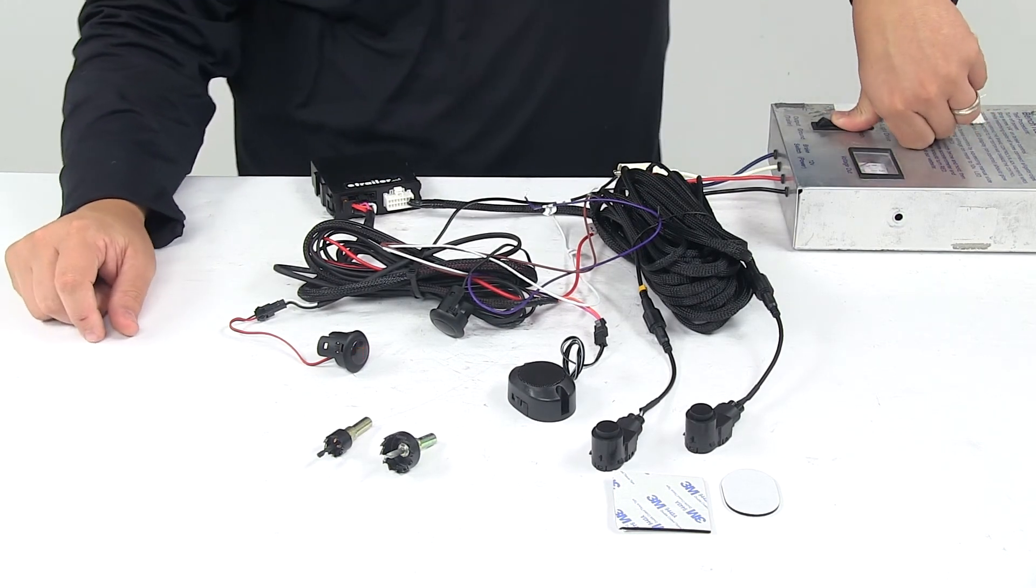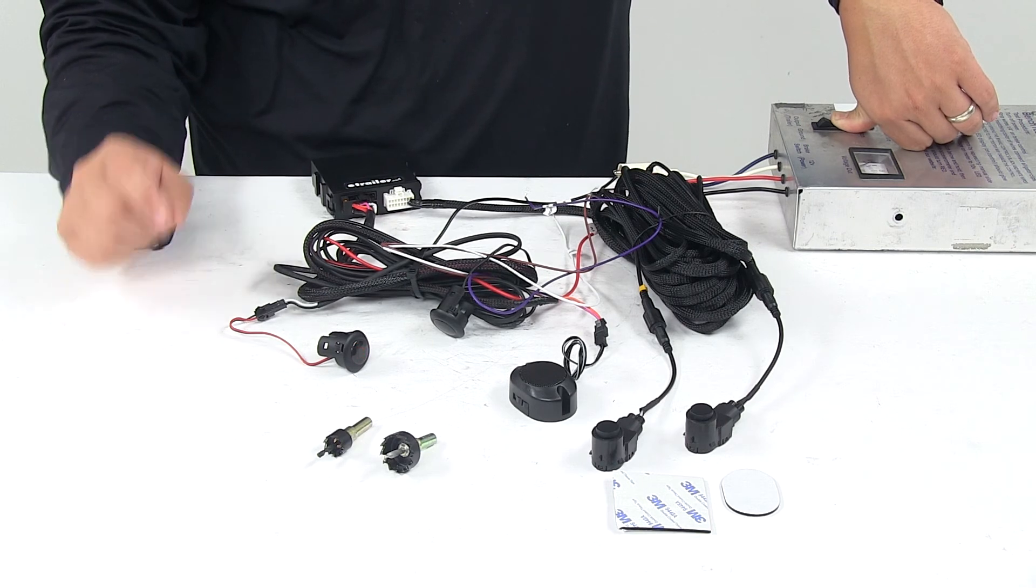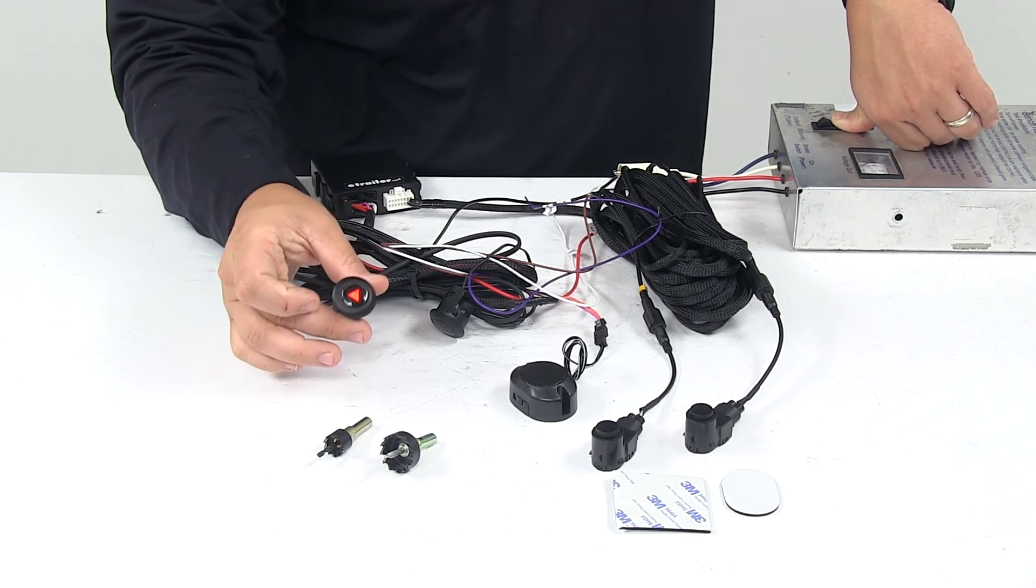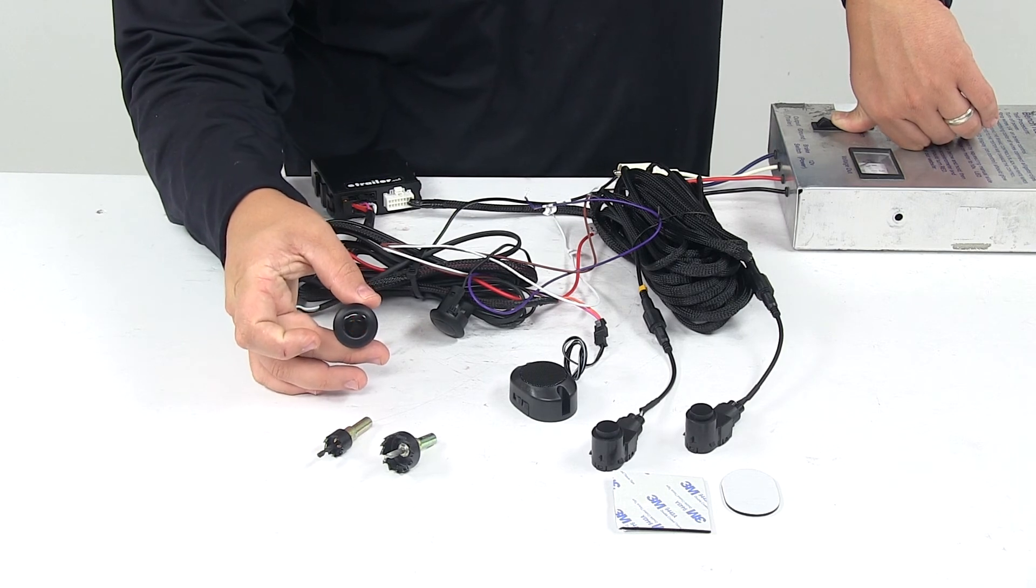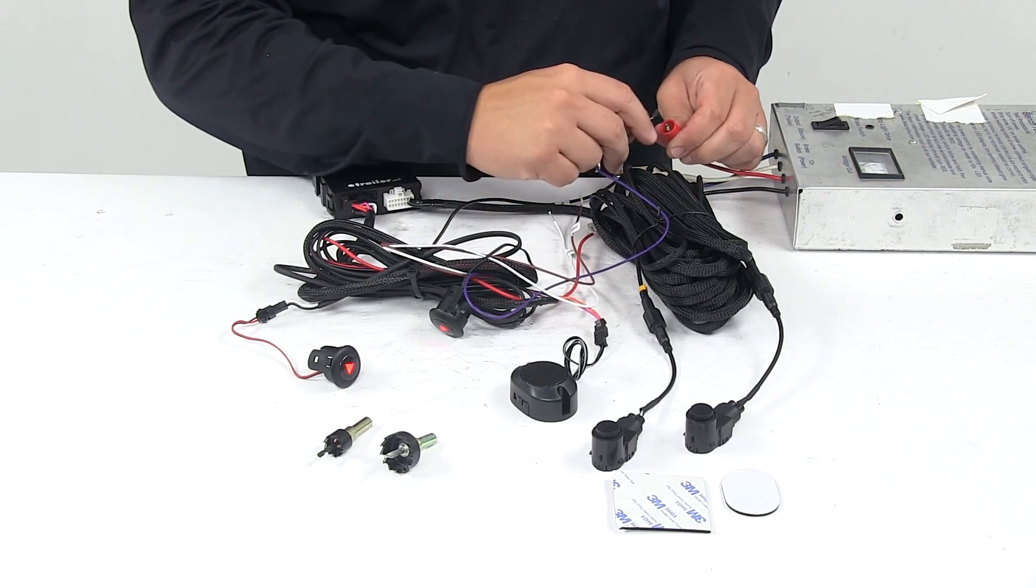When I activate my turn signal you can hear that making that chirping sound. That's the audio alert. And then also we have the visual sensor right there. And it does the same thing. I'll go ahead and hook up the other one.